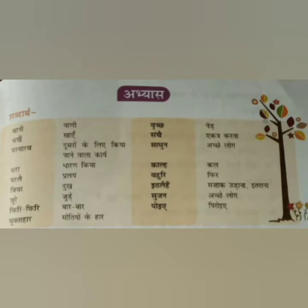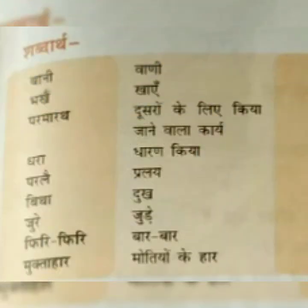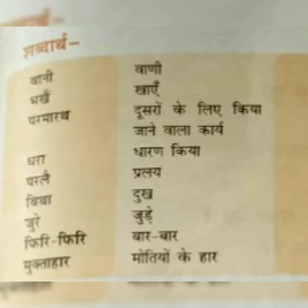The first word is Bani. Bani means Vani — the correct word is Vani. It means wise speech. Bhakhaen means khayen, to eat. Paramarath — the actual word is Paramarth — means the work done for the welfare of others.